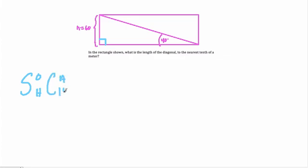SOHCAHTOA is our nice little acronym to remember what these trigonometric ratios represent, where sine represents opposite over hypotenuse, cosine represents adjacent over hypotenuse, and tangent represents opposite over adjacent.